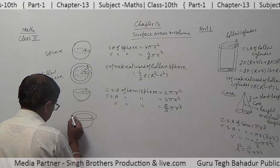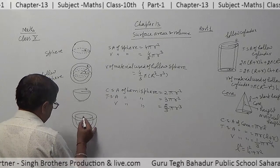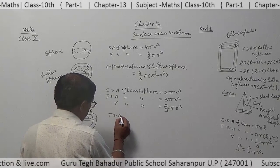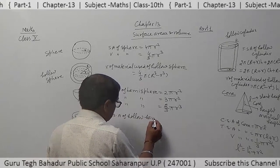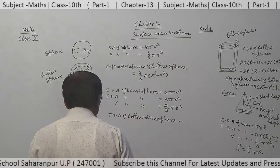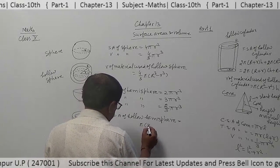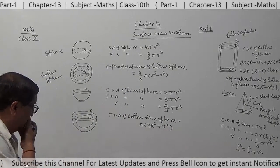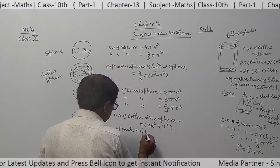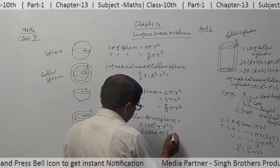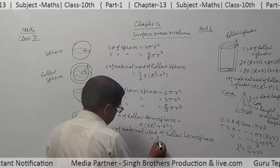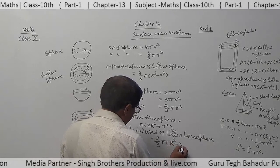This is your hollow hemisphere. This is small r (inner radius) and capital R (outer radius). Total surface area of hollow hemisphere is π(3R squared plus r squared). Volume of material used in hollow hemisphere is (2/3)π(R cubed minus r cubed).